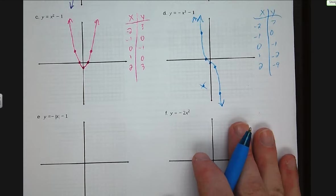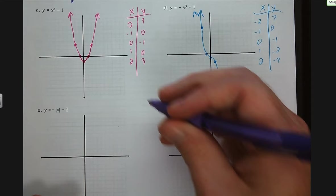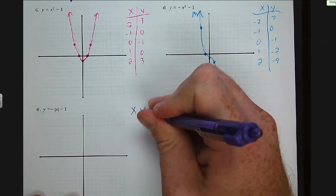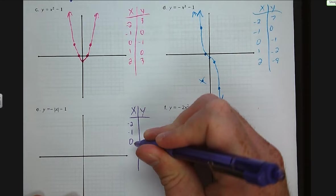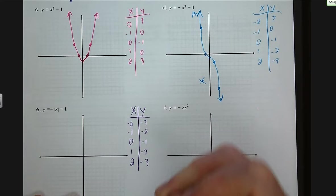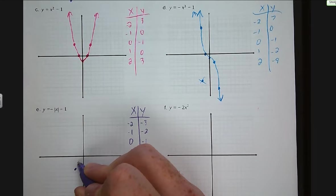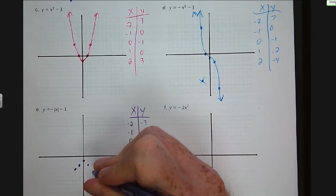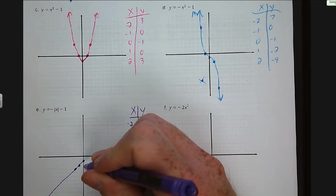Letter E — we have the opposite of the absolute value of x, minus one. We put our points x and y: negative two, negative one, zero, one, and two. When you plug the numbers in, you get negative three, negative two, negative one, negative two, negative three. We graph those points. Again, it's an absolute value graph — it's going to be straight lines with arrows on the end, and it's opening down.